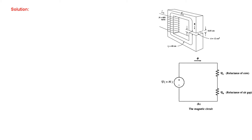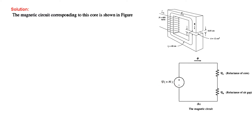Let's discuss how this question has been solved in the book. The first thing we have to do is draw the magnetic circuit corresponding to the core. We take three elements: the magnetomotive source (equivalent to a voltage source), a reluctance due to the core RC (like a resistance), and a reluctance due to the air gap RA. These are in series, forming the complete magnetic circuit.